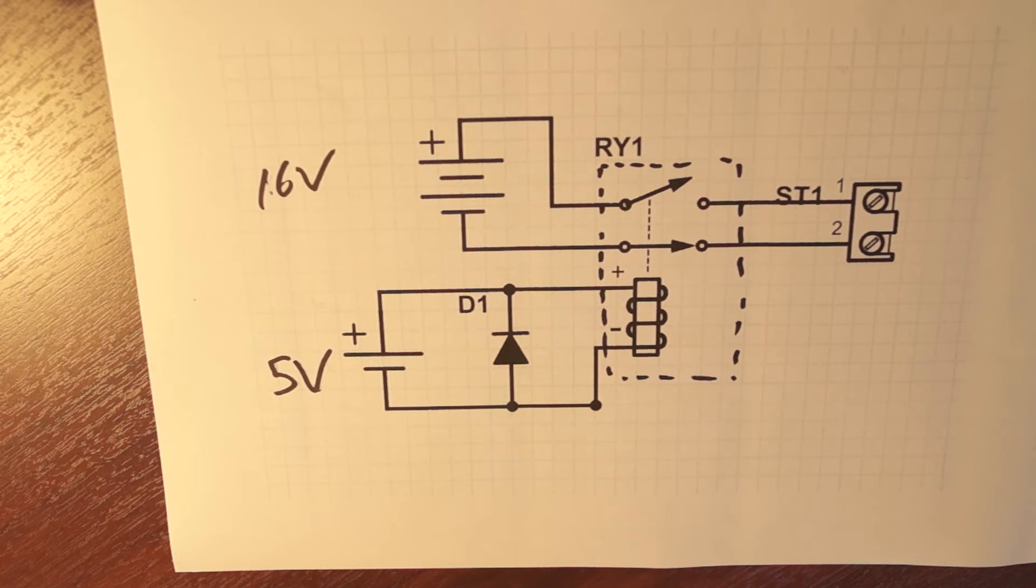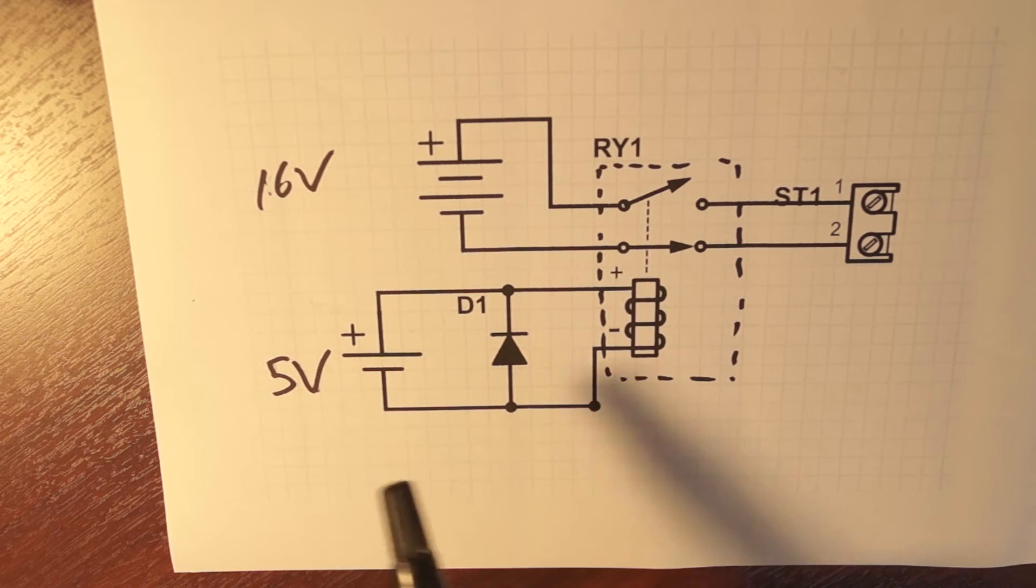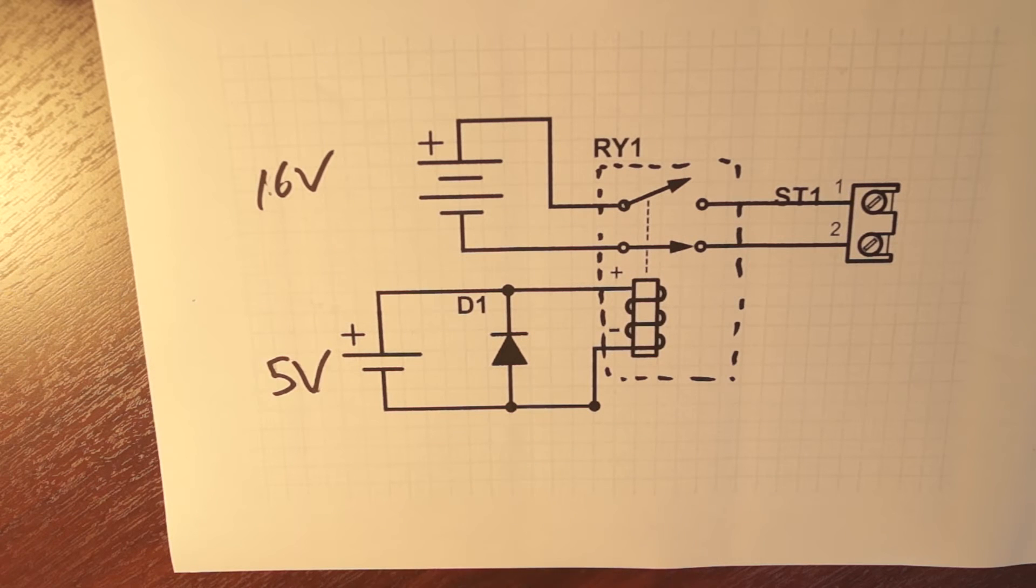Now this begs the question of why I went through all this trouble to use a relay instead of a FET, which is also going to do the same job and is commonly used in ESCs. The truth is, is that it isn't easy to use a FET to get a 5-volt signal to drive a 16-volt signal. ESCs use something called a charge pump that manages this, and unfortunately that goes beyond my understanding of electronics as a software engineer.